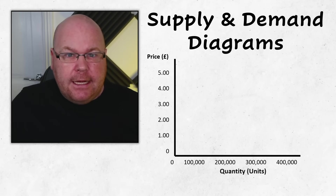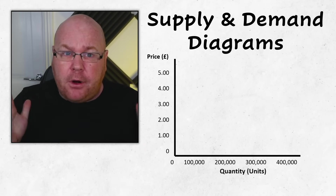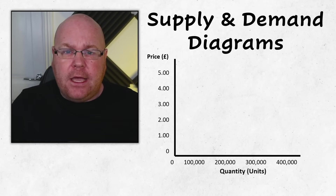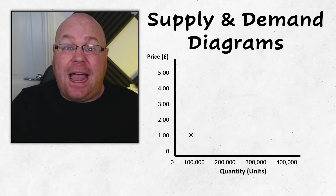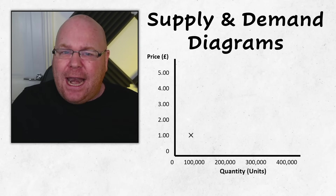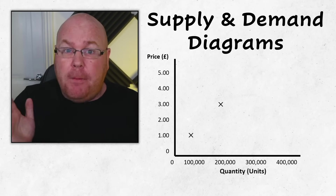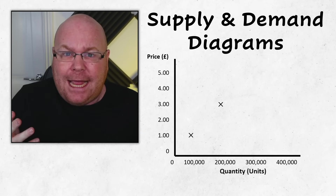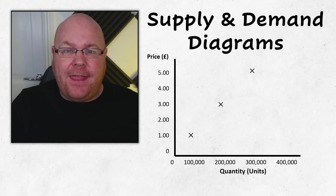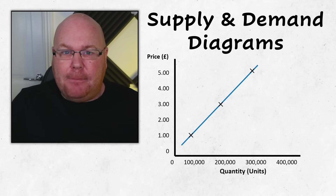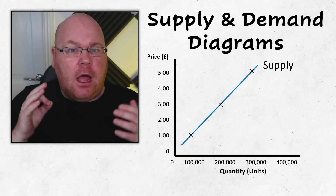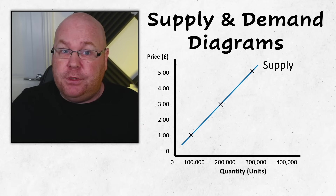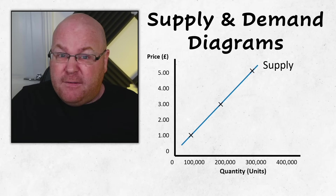Having drawn the demand curve — which illustrates the number of consumers willing to purchase a product at a given price — we're now ready to draw the supply curve, which moves in the opposite direction. When prices are low there are fewer producers willing to manufacture that good or service. As prices get higher, more new entrants will want to jump into that market, or firms already active may increase their scale of output, which means the supply curve slopes upward — supply goes up to the sky.